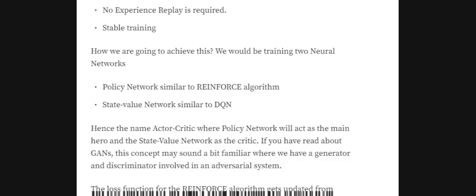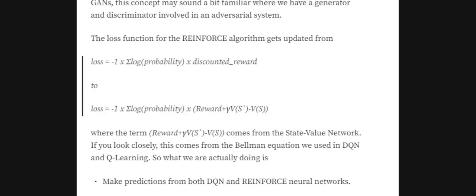In Actor-Critic, as the name suggests, we use two neural networks: one is the Actor and the other is the Critic. The Actor is the policy network used in REINFORCE, and the Critic is the state-value network, very similar to DQNs. So we have combined these two models — the major algorithm is the policy network (Actor), and its Critic is the state-value network (DQN).